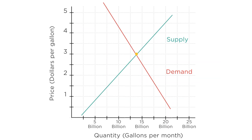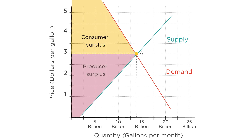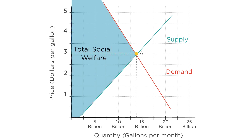Graphically, we can see this by returning to our gas market example. Suppose the market is in equilibrium at point A, where the price is $3 a gallon and quantity produced is 14 billion gallons a month. Consumer surplus is the area of the triangle here, producer surplus is the area of the triangle here, and total social welfare is the sum of these two triangles — this entire area here. This total social welfare is at a maximum when the price is set at its equilibrium value of $3.